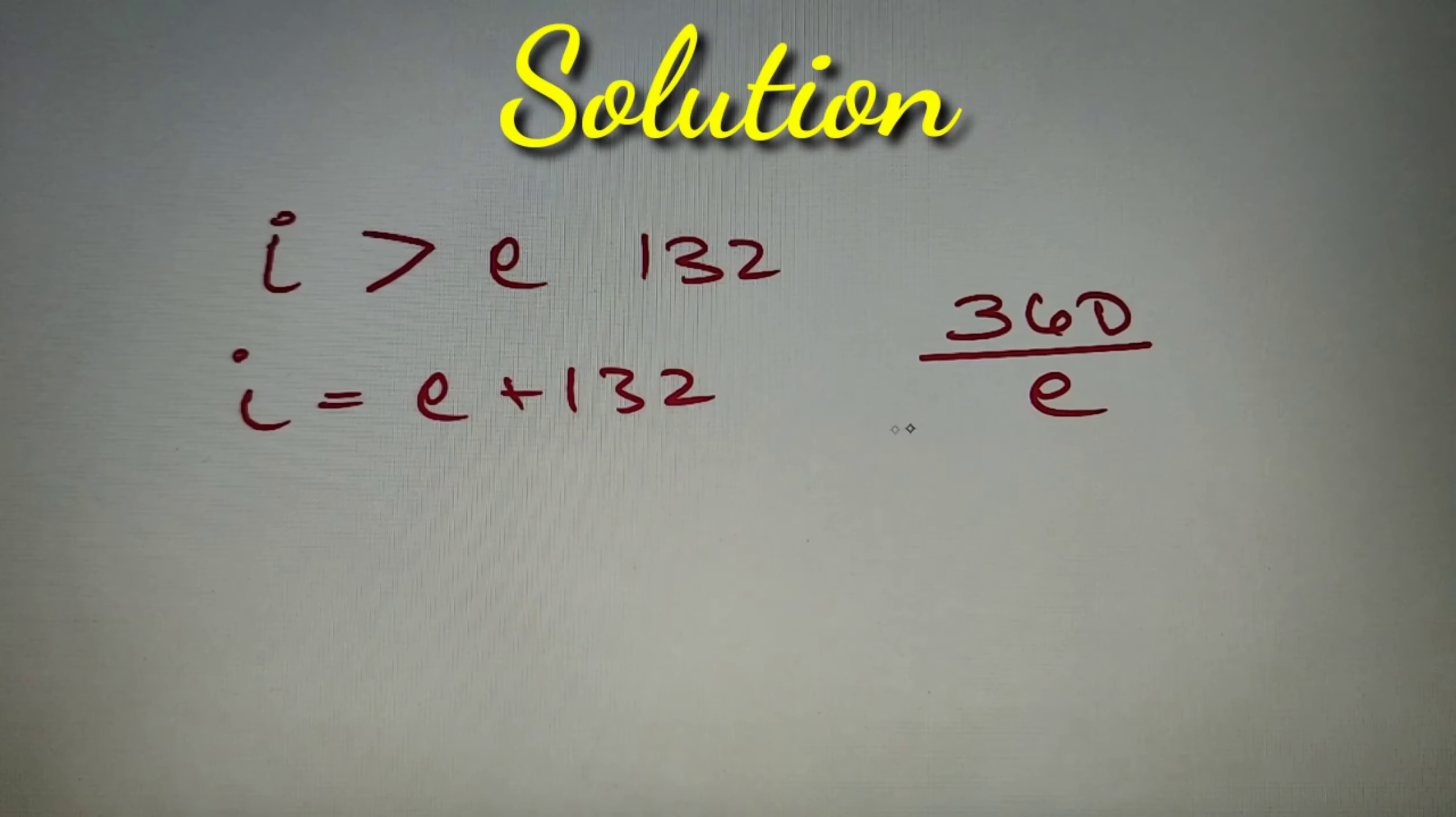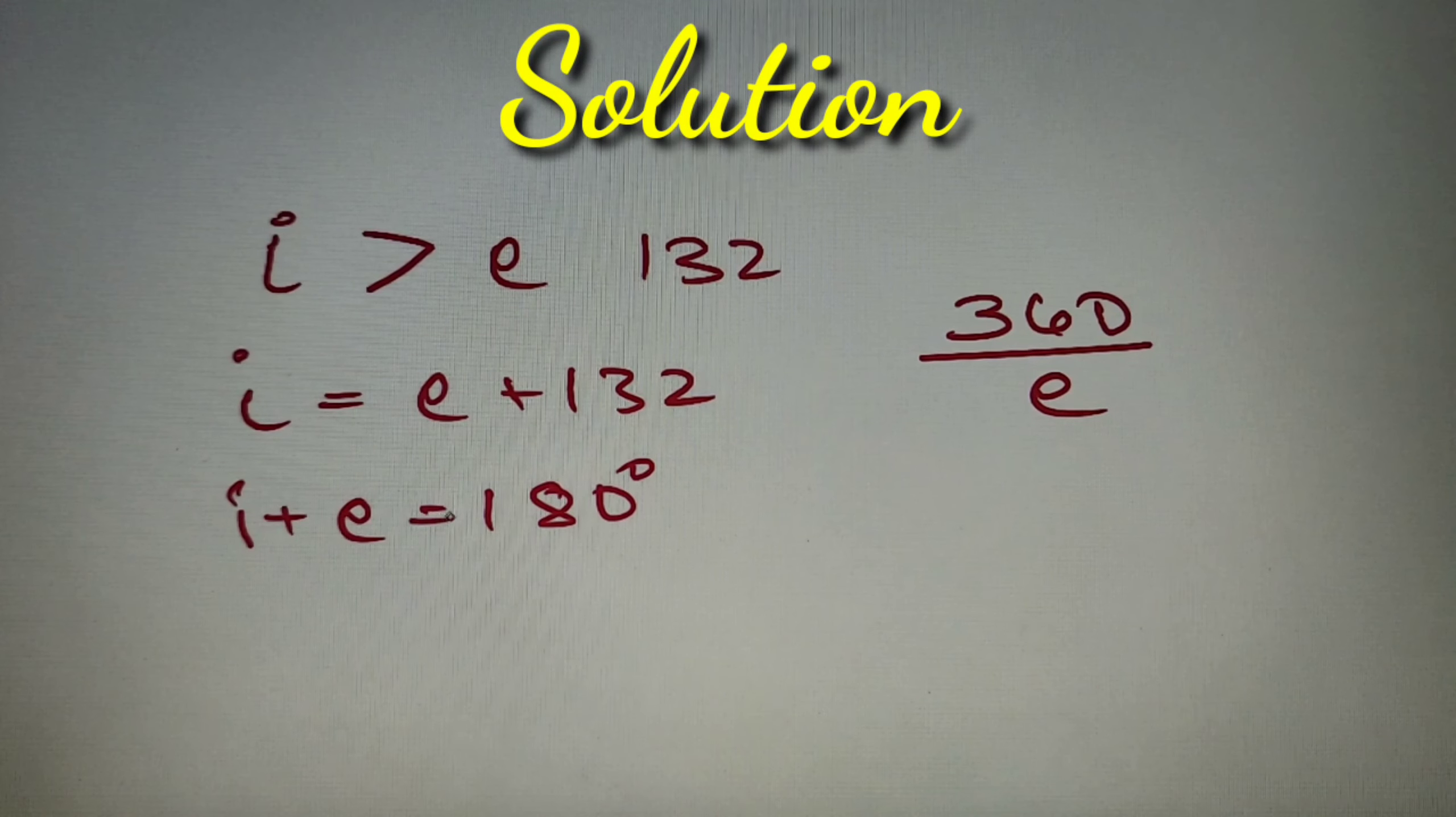Now to find the value of e, we will use one more equation: i + e = 180 degrees. That is, interior angle plus exterior angle of a regular polygon sums up to 180 degrees.